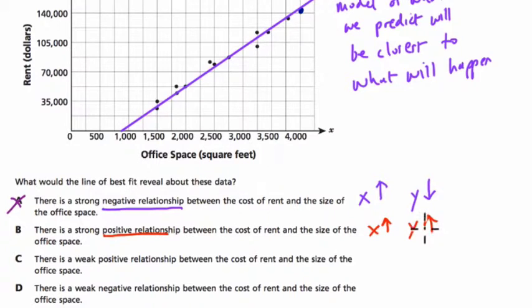So as Y goes up, the office space also goes up. Cost and rent, cost and space are connected positively. In other words, they both move in the same direction, and that's B.